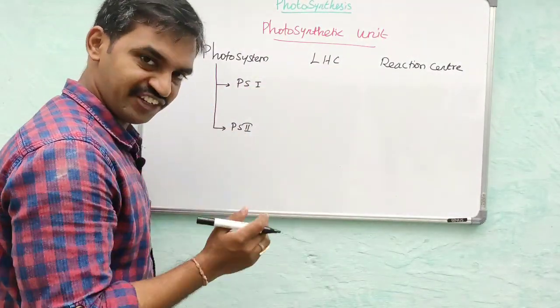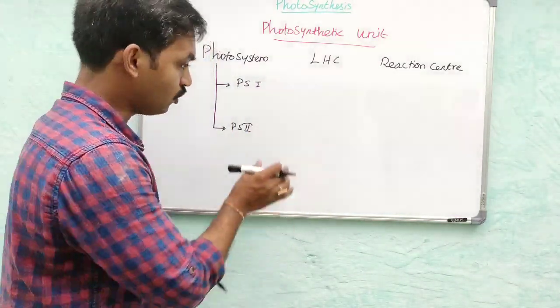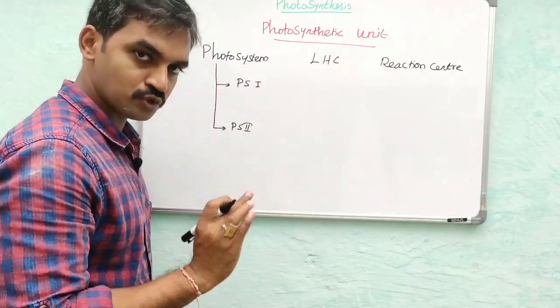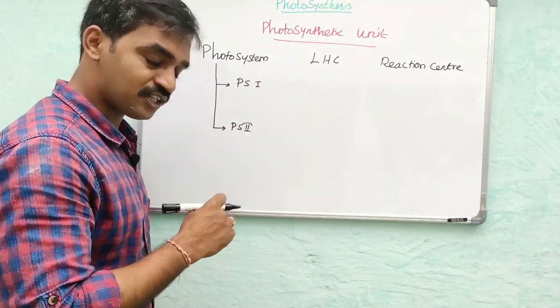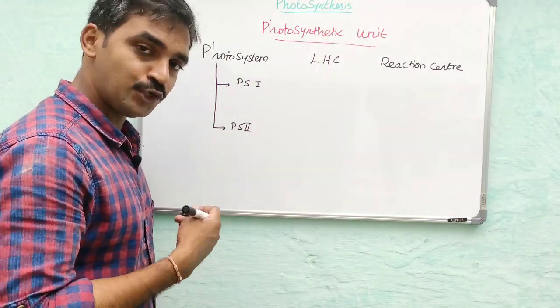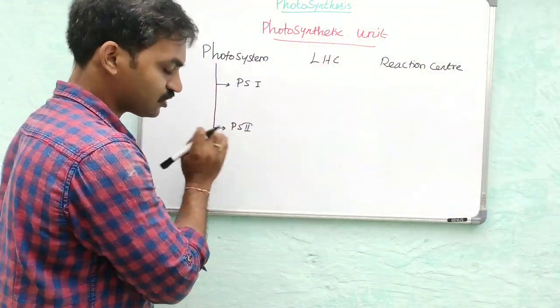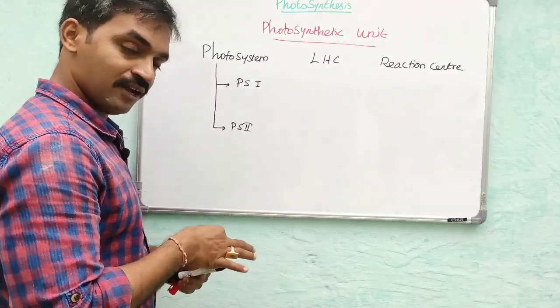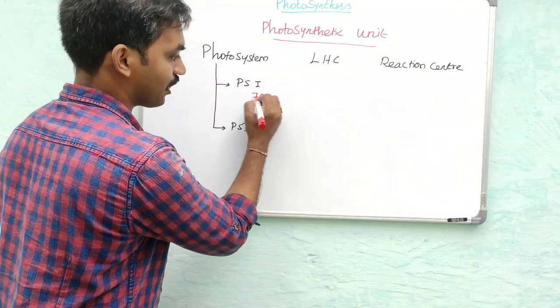The main difference between PS1 and PS2 is the type of chlorophyll a present. Chlorophyll a is the primary pigment present in all green plants and is the universal pigment. In PS1, the wavelength of light absorbed is 700 nanometers.